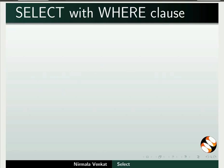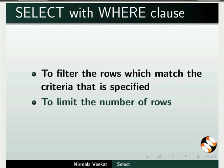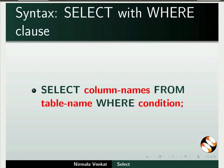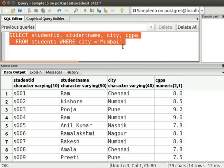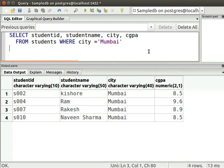SELECT with WHERE clause is used to filter the rows which match the specified criteria and to limit the number of rows. The syntax is: SELECT COLUMN_NAMES FROM TABLE_NAME WHERE CONDITION. Records that satisfy the specified condition will be displayed. Switch back to the PGAdmin SQL editor and type: SELECT STUDENT_ID, Student Name, City, CGPA FROM students WHERE CITY = 'Mumbai'. Now execute this query.